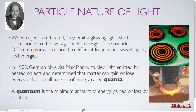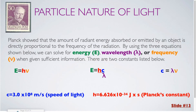A quantum is the minimum amount of energy gained or lost by an atom. Planck showed that the amount of radiant energy absorbed or emitted by an object is directly proportional to the frequency of the radiation. By using the three equations shown below, we can solve for the energy, wavelength, or frequency when given sufficient information. There are two constants listed below.